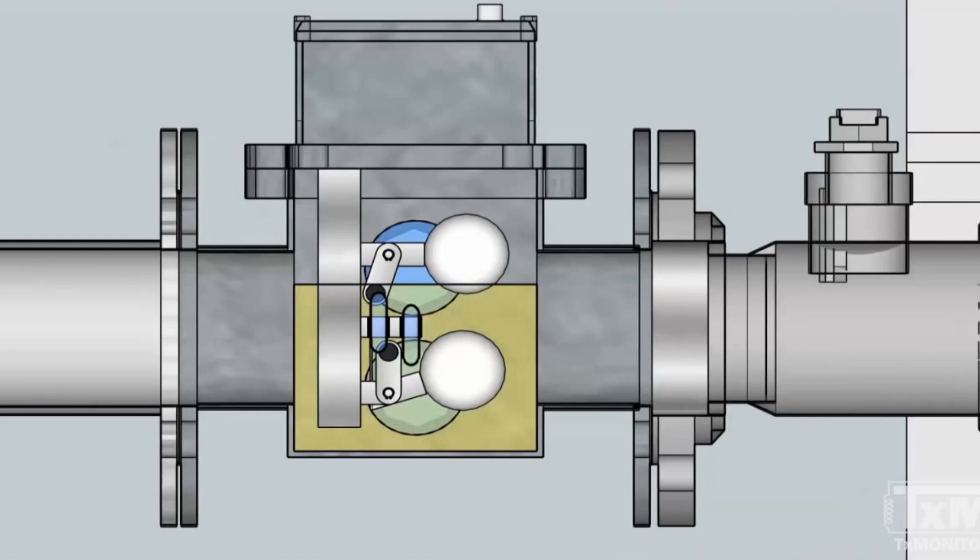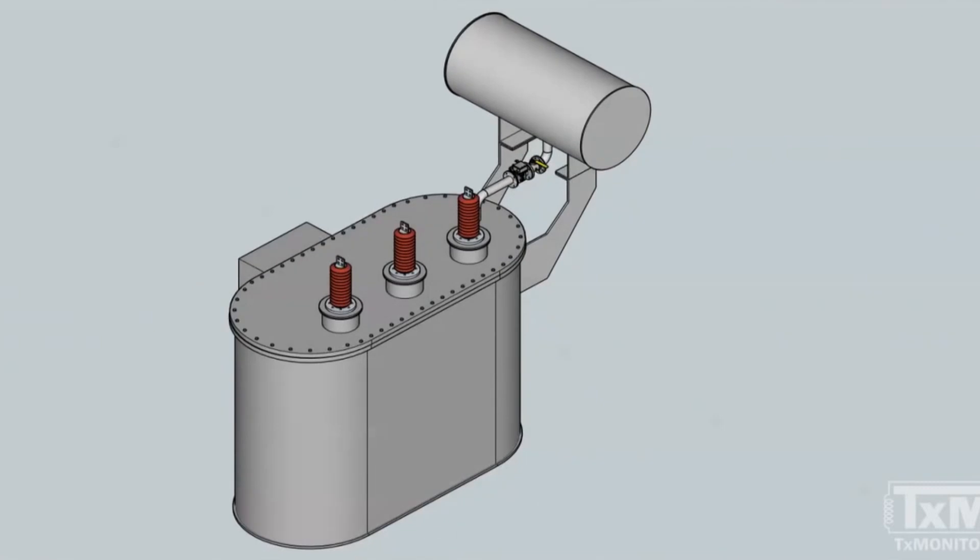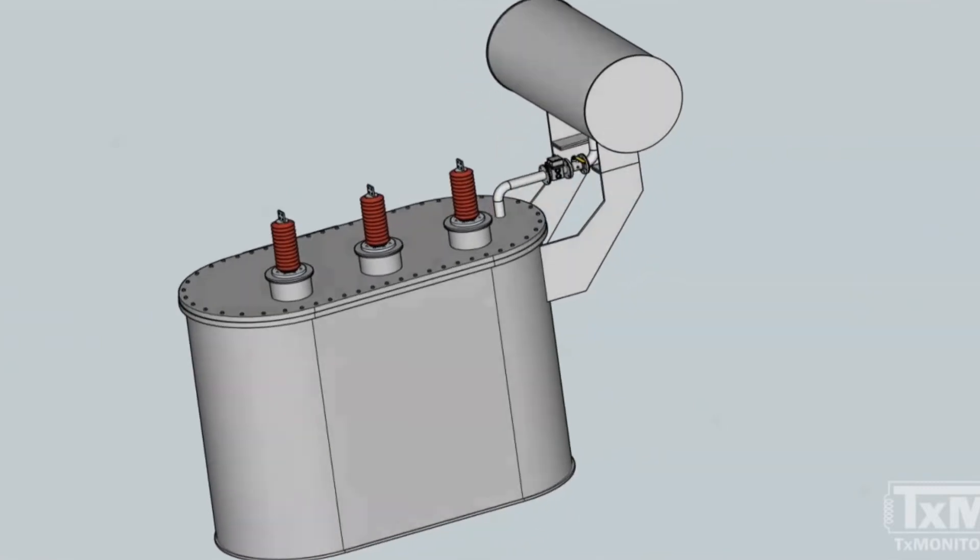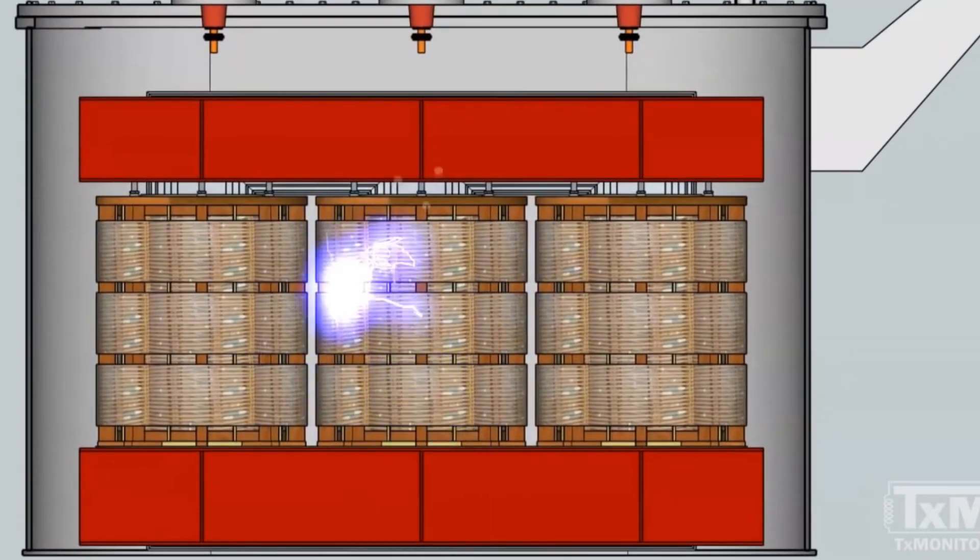It is on this pipe where the Buchholz relay is typically installed to trap the bubbles before they reach the conservator tank. These free gases are commonly the result of abnormal conditions inside the transformer and are also useful in the diagnosis of these conditions.